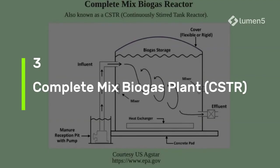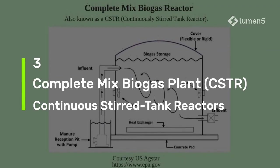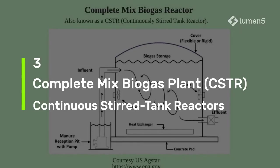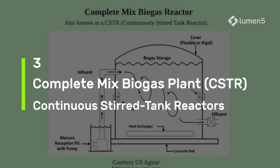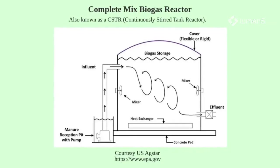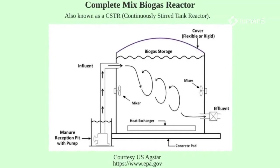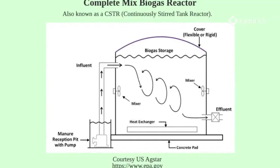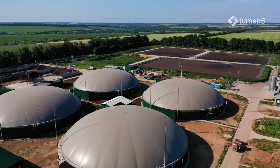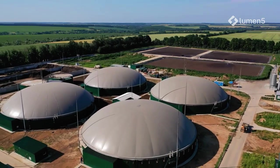Type 3: Complete mix biogas plant. Also called CSTRs — continuous stirred tank reactors — these use mixing and heating for efficient digestion. This is by far the most common design used across the globe.